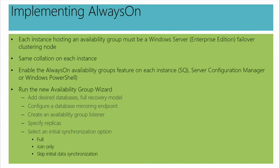After I enable it, I walk through a wizard. You have to configure what databases you want as part of the availability group, configure a database mirroring endpoint — that sounds familiar — create an availability group listener, specify replica copies, and then select an initial synchronization option.